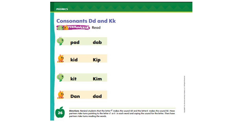Now you need to open your books on page number 26 in your MyView unit 2. On this page for consonant D and K, we have to read these words. Look at the words, try to spell them out just like we did together and read the words for me. Have one of your family members take a video of your reading and send it to me, please.